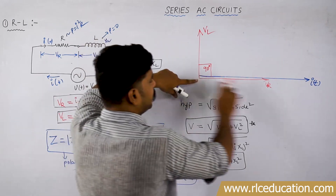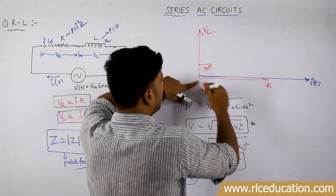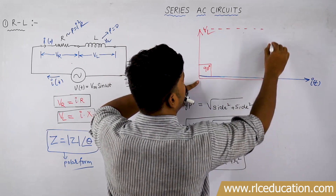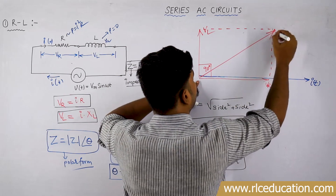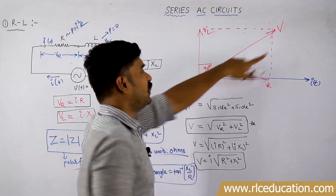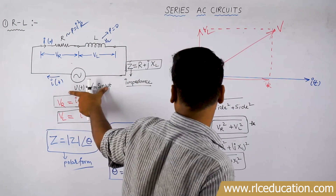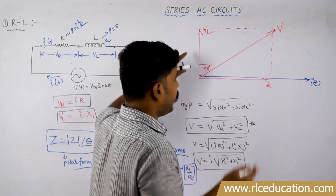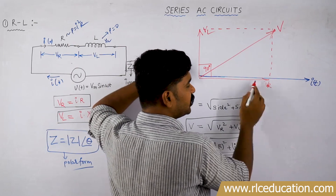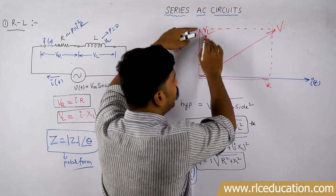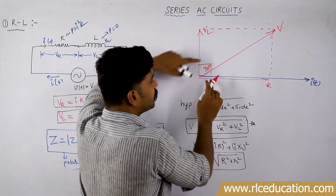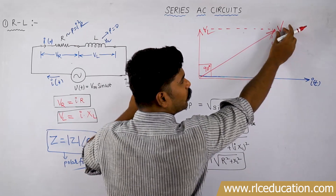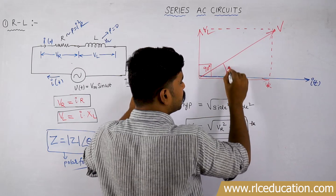VR and VL are two vector quantities. According to the triangular law of vectors, their resultant is the vector sum of both. Taking that vector sum gives the resultant quantity, which is the total supply voltage V(t). In a resistor the angle between voltage and current is 0 degrees; in an inductor it is 90 degrees. But in an RL combination, the angle between the total supply voltage and current is some angle theta.